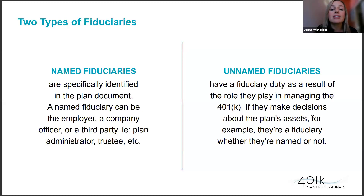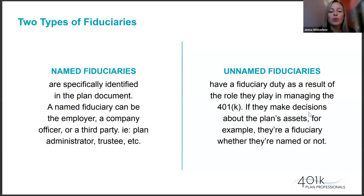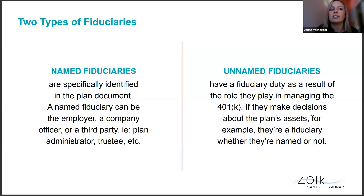There are two types. First, named fiduciaries — someone listed in legal plan documents like the adoption agreement or the summary plan description, such as an employer, company officer, administrator, or trustee. On the other hand, there are unnamed fiduciaries: someone who plays a role in managing the 401k but isn't named anywhere. A great example is someone in payroll who submits contributions and is responsible for making timely deposits, but whose name isn't listed on any documents.